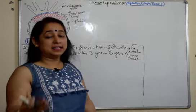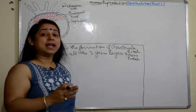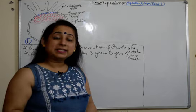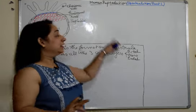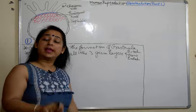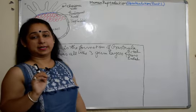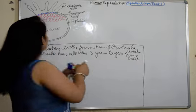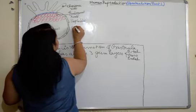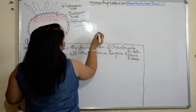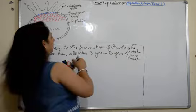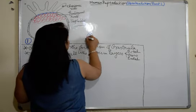In this video we will cover two very important topics: how the amniotic sac is formed at this stage, and how the primitive streak is formed and what its significance is.